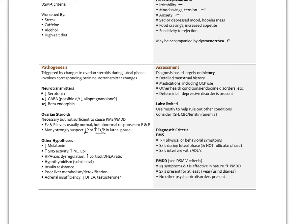A lot of functional and naturopathic support for PMS involves clearing estrogens and maybe supporting progesterone. Other hypotheses involve low melatonin, high sympathetic tone, overactivation of the HPA axis with high cortisol, hypothyroidism (even subclinical), insulin resistance, poor liver metabolism and detox especially of estrogen metabolites, and potentially adrenal insufficiency with low DHEA. In practice, there's no one cause of PMS — I look through these different patterns, identify them, and treat accordingly.